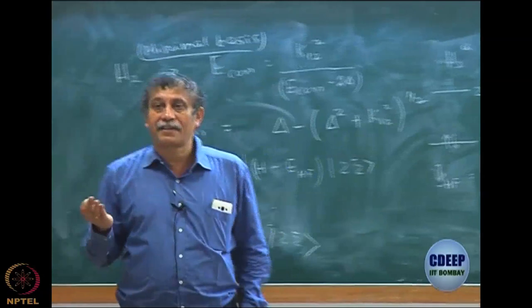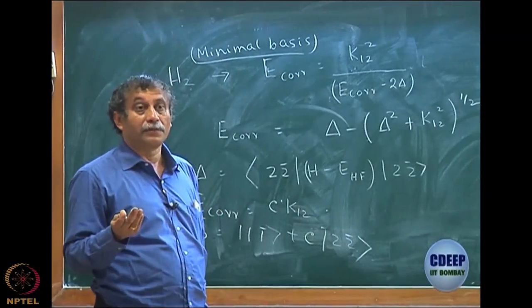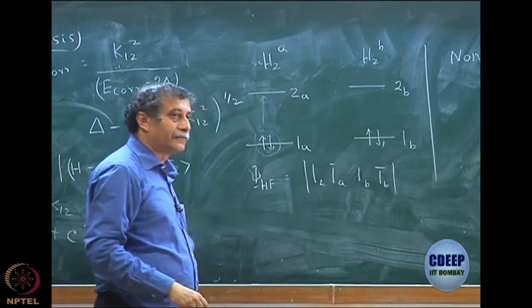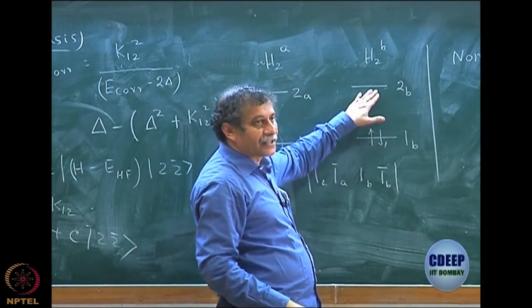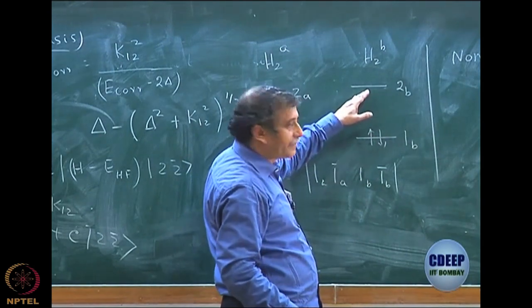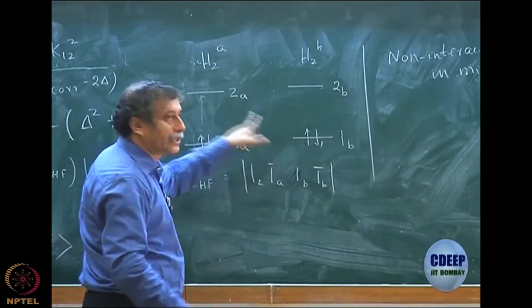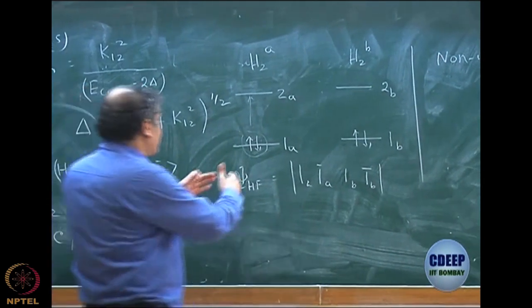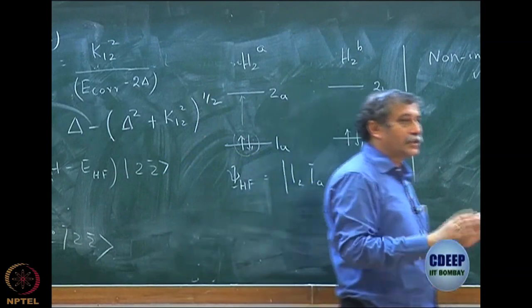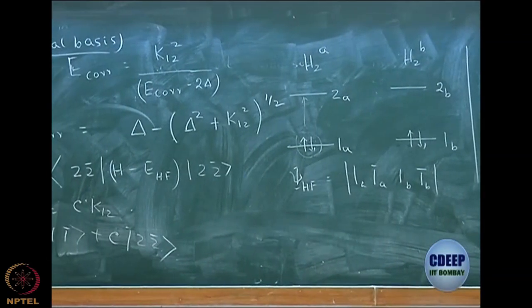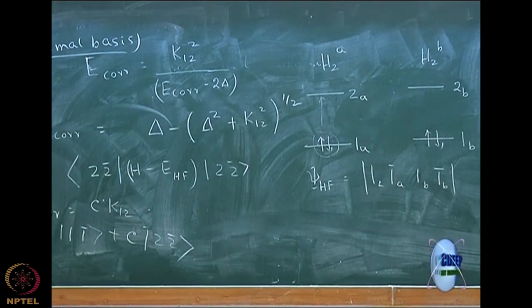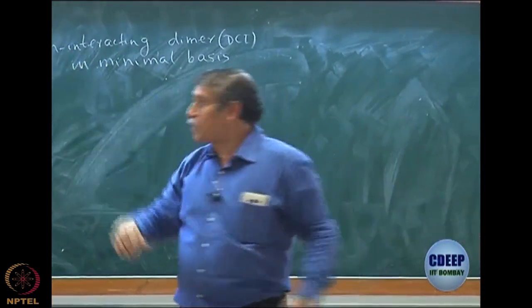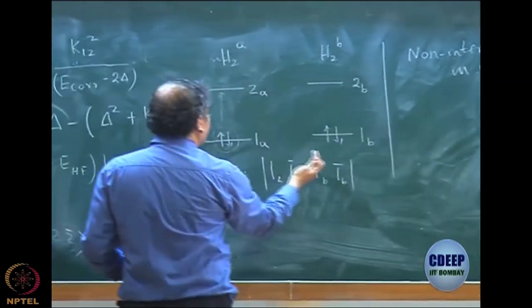Now I have to discuss what the doubly excited configurations are. How many doubly excited configurations are possible? Since they are non-interacting, any interaction between monomer A and B becomes zero because the integral will become zero. Physically, you cannot push an electron from here to there because they are infinitely apart. So the only possibilities are excitations within each molecule.